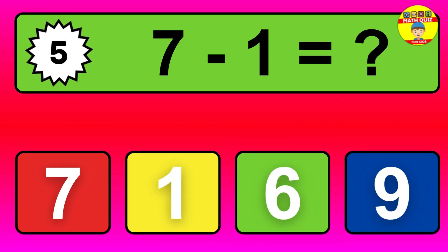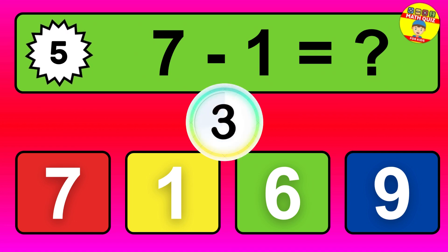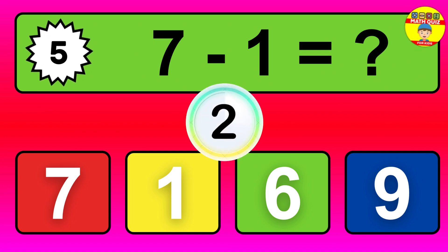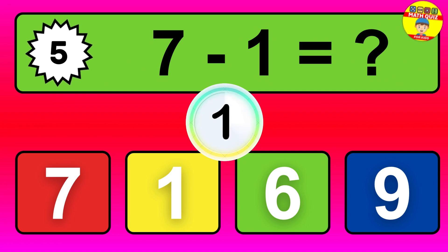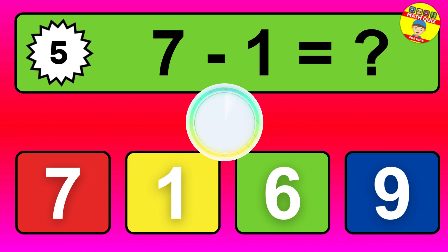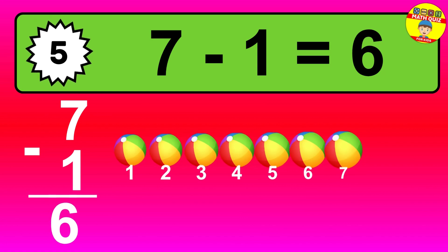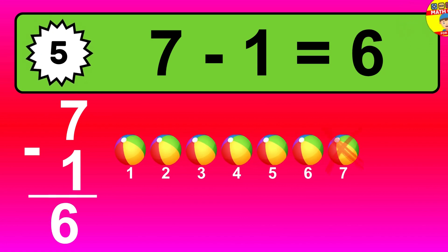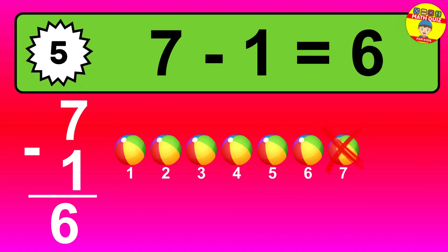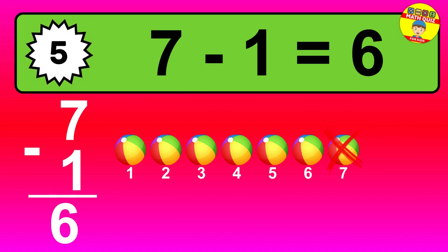Question five: seven minus one equals what? The answer is seven minus one is six. Let's count it. One, two, three, four, five, six.